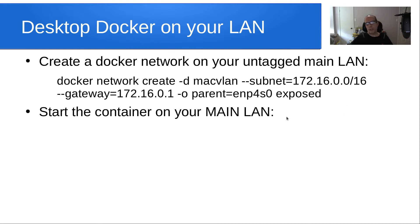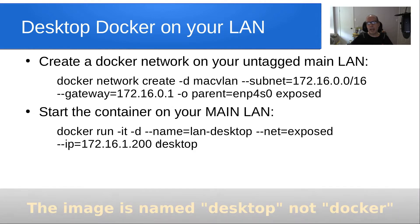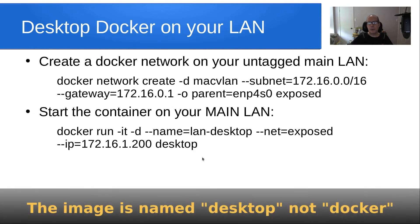Now I want to start my Docker container with the full desktop on my main LAN. The command is docker run -it -d, giving it a name of lan-desktop, using the exposed network I created, and giving it an address of 172.16.1.200, which is a valid address on my main LAN. I'm using the image named desktop to create this container.